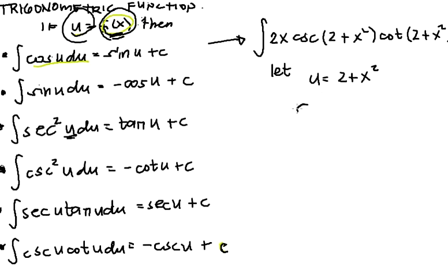Then by getting the derivative, we have the derivative of 2 is 0, plus the derivative of x² is 2x dx.